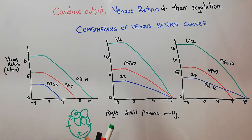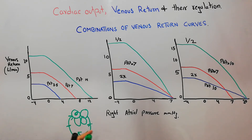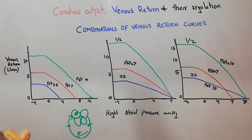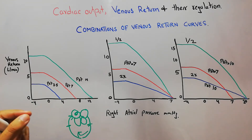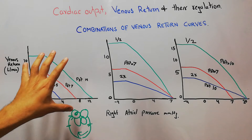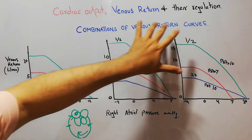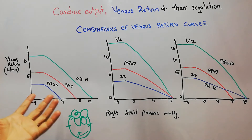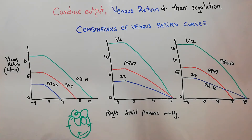Mean systemic filling pressure pushes blood towards the heart, while venous resistance tries to decrease the amount of blood moving towards the heart, and right atrial pressure may or may not resist blood flow. We have discussed these factors in detail in previous lectures, and in this lecture we are specifically going to combine the different factors. To properly understand the venous return curve, you must watch our previous lectures.